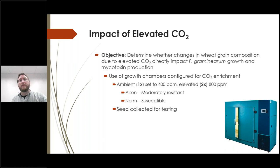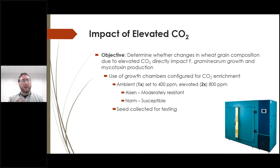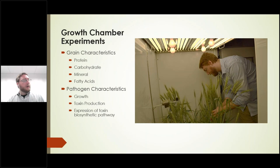We used growth chambers configured for CO2 enrichment, set at 400 parts per million (approximately ambient CO2) and at elevated 800 parts per million. We selected two wheat cultivars: Elsin, which is moderately resistant to Fusarium head blight, and Norm, which is a susceptible variety. We grew them to maturity and collected their seed for testing. We looked at various grain characteristics: protein concentration, carbohydrate concentration, mineral concentration, and fatty acids. When we grew the fungal pathogens on the grain, we looked at fungal growth, toxin production, and expression of toxin biosynthetic pathways.